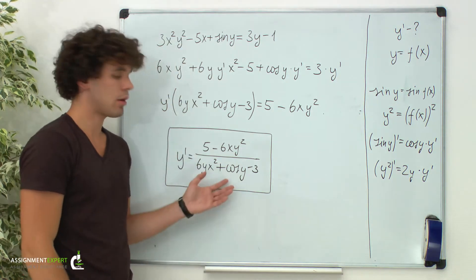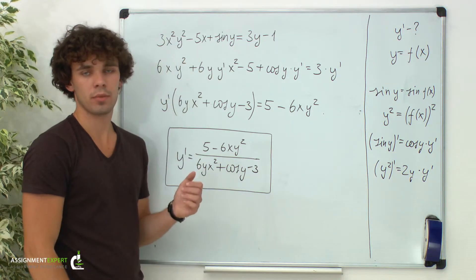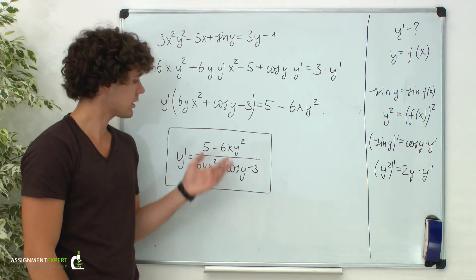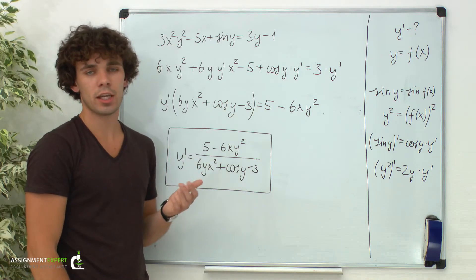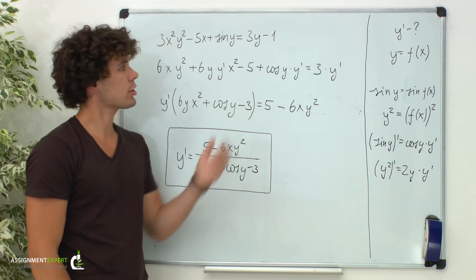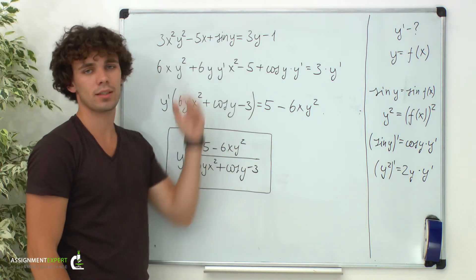So here we found y prime. As we can see, it contains y, but that's okay because our function was given implicitly.